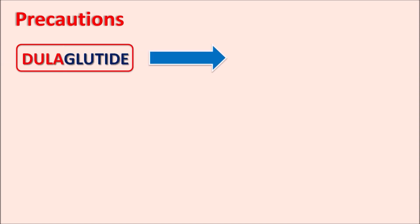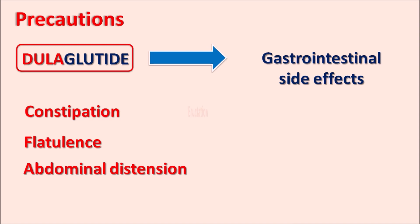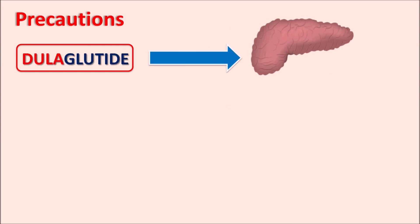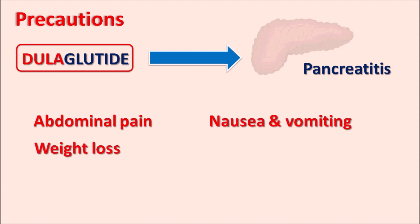One important precaution with Dulaglutide is that it can produce gastrointestinal side effects. We can observe gastrointestinal disturbances such as constipation, flatulence, abdominal distension, eructation, expulsion of gases through the mouth, and gastroesophageal reflux. This drug can also affect the pancreas — it can produce pancreatitis, causing abdominal pain, weight loss, nausea, vomiting, and diarrhea. If any of these symptoms are observed, the drug should be stopped and replaced with an alternative agent.